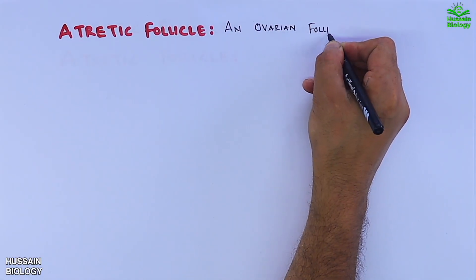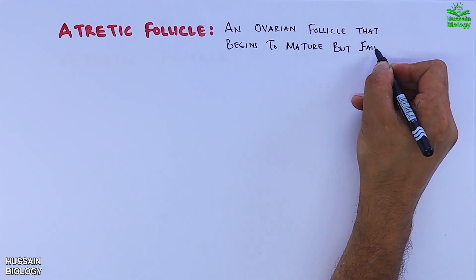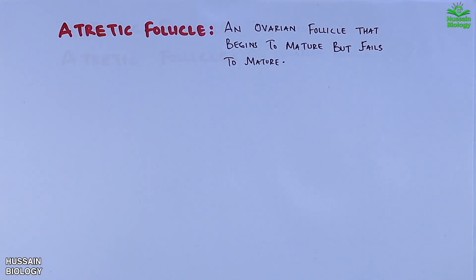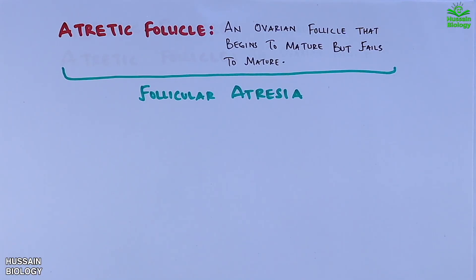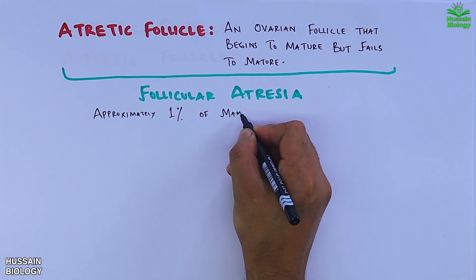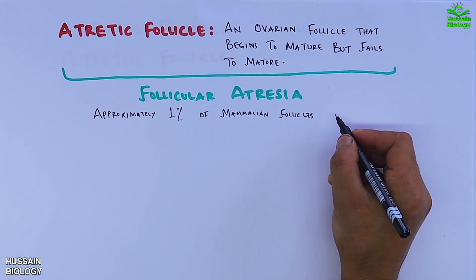It's an ovarian follicle that begins to mature but fails to mature, and this process is termed as follicular atresia. Approximately one percent of mammalian follicles in the ovaries undergo ovulation and rest 99 percent follow the follicular atresia.